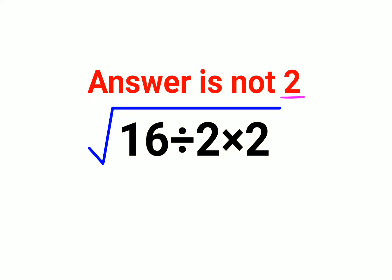A lot of people thought we keep the 16 under the root. 16 divided by 2 times 2, which is 4. So 16 divided by 4 is 4.